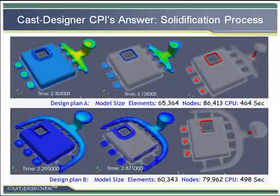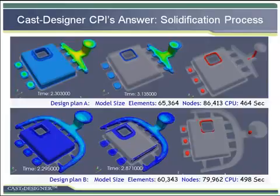These are the solidification results, including temperature distribution, liquid fraction or solid fraction, and shrinkage porosity. With these results, we can predict casting problems and defects easily. The simulation time is very short — both solutions take less than 10 minutes.